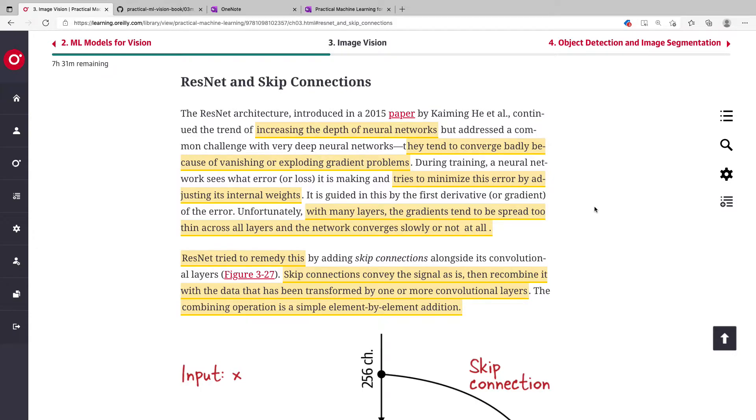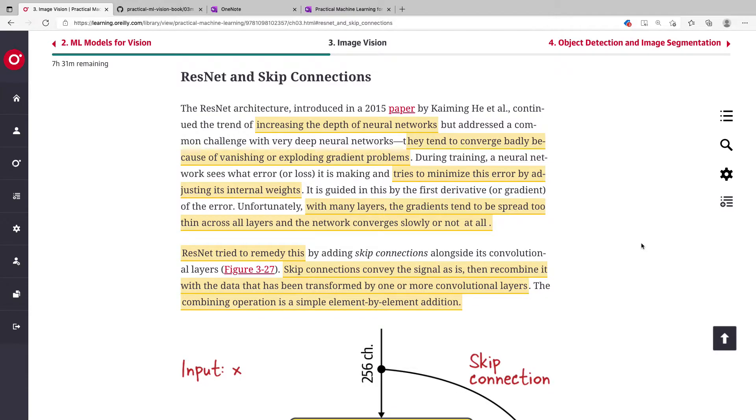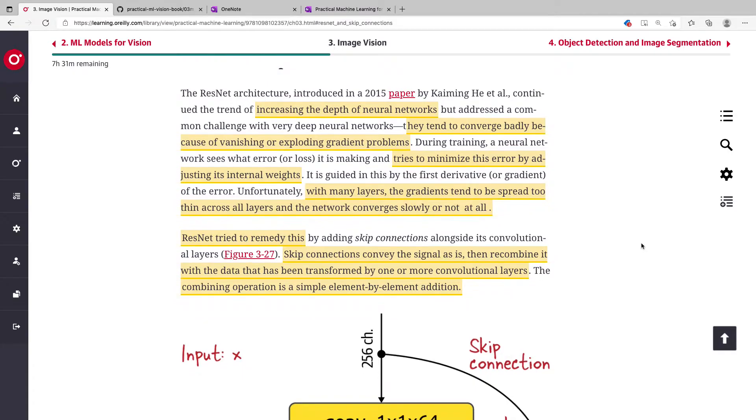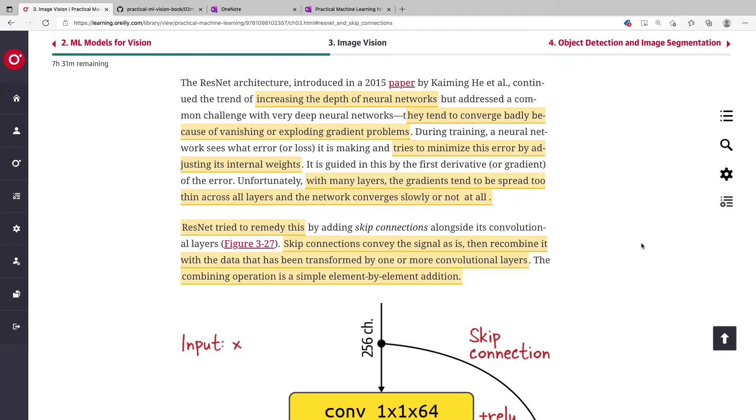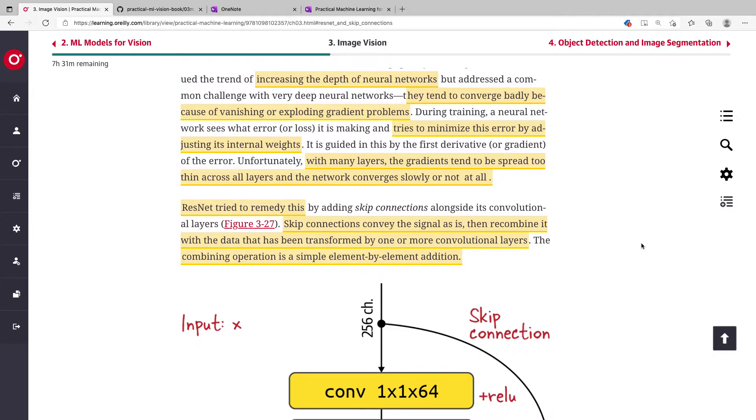To be able to solve the problem of vanishing and exploding gradient problems, which I've explained in one of the videos, the authors intuited that you can use a skip connection so that backpropagating the gradient flow to adjust the weights could have an alternative route. This has proved to work, so when you have a very deep network, you can overcome the problem of vanishing and exploding gradients using skip connections.